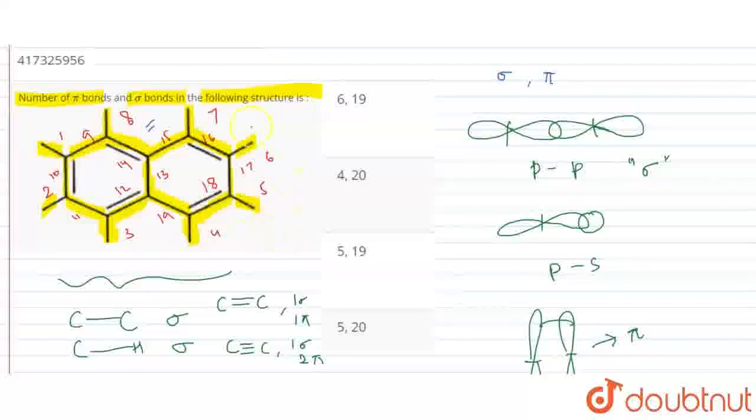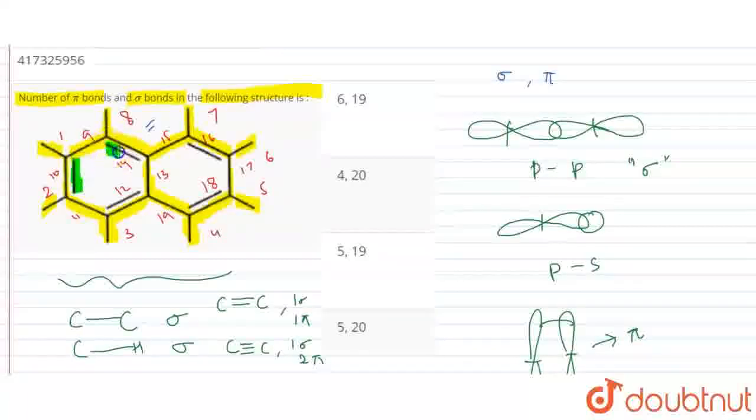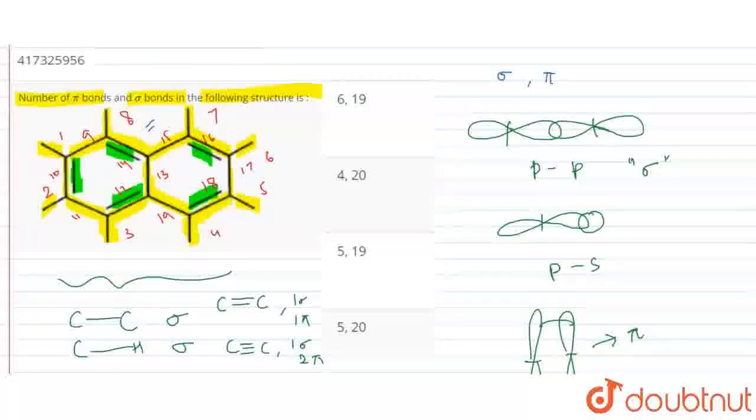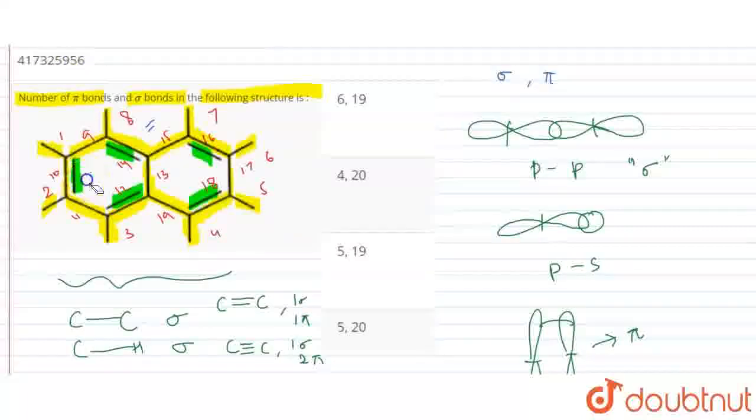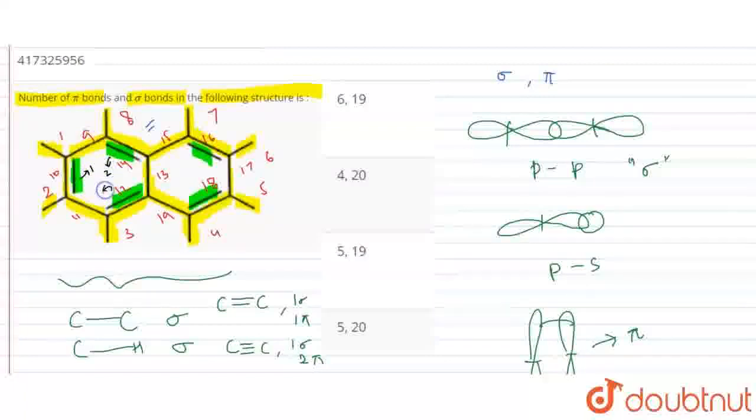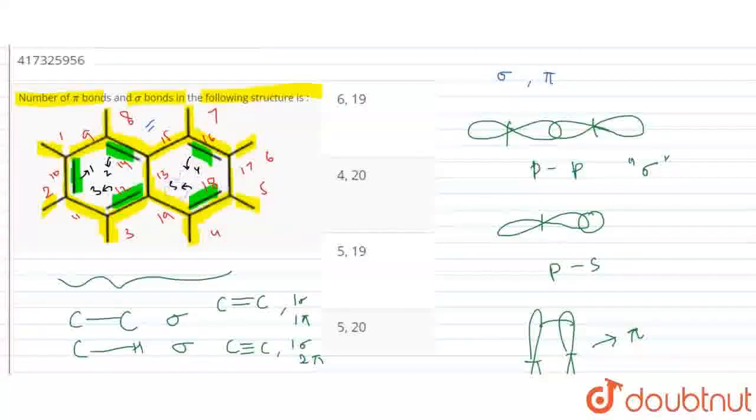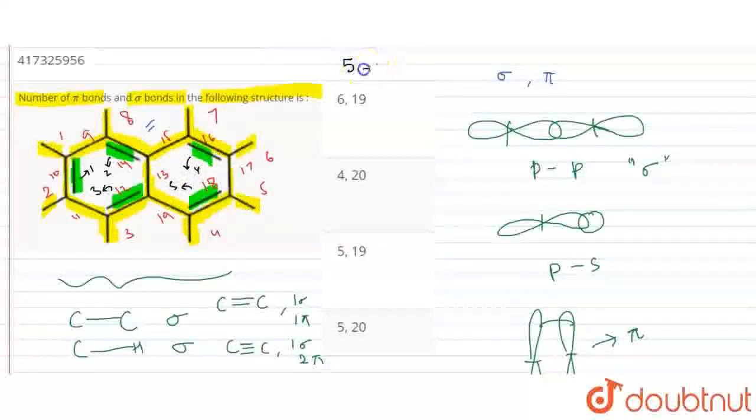Now if we have pi bonds, then the extra double bonds will be pi bonds. And then we will note green. One, two, three, four, and five. So five pi bonds and 19 sigma bonds.